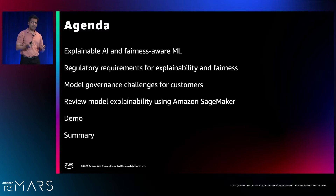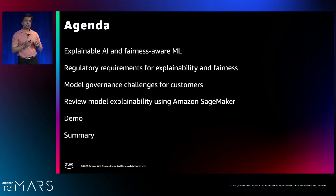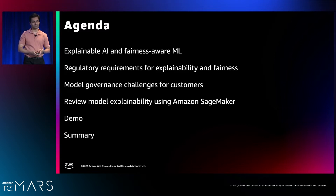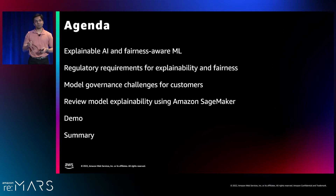We will start with an overview of what is explainable AI and what is fairness-aware ML. Then we will go into the regulatory requirements of explainability and fairness. We will also be touching upon a recurring theme which is responsible AI and ethical AI. The AI in itself can't be ethical or responsible — it's the humans who are going to use that AI which make them ethical or responsible. We will touch upon model governance frameworks and policies for deploying machine learning models into production, especially for financial customers dealing with credit risk, mortgage, or insurance.